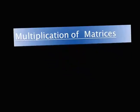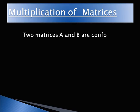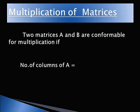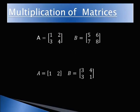Two matrices A and B are confirmable for multiplication if the number of columns of A is equal to the number of rows of B.